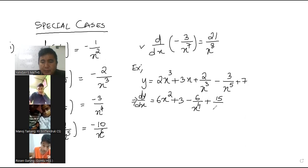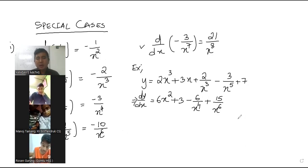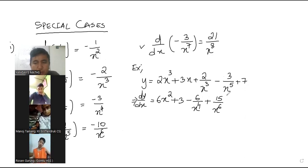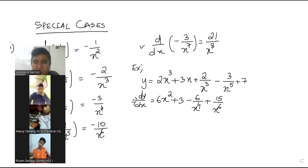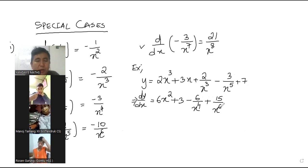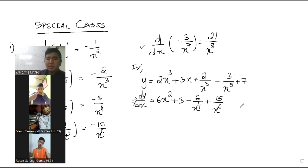On this side we already have a negative; when you differentiate this function you will get one more negative. That negative and this negative become positive. Then five will multiply with three, it becomes 15. The power of x will increase by one, it becomes six. Then plus seven is a constant.